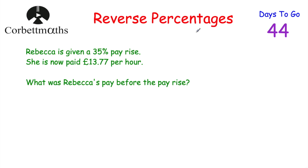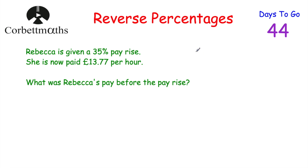Reverse percentages is whenever we know what the value is after something's been increased or decreased by a percentage, and we have to go back and find the original. There are two approaches: one where we write down what percentage we've now got, work out 1%, then find 100%; or another approach is to use the multiplier, which we've also seen in compound interest.